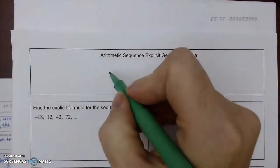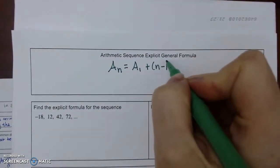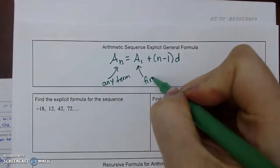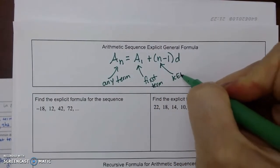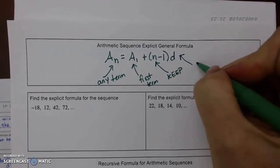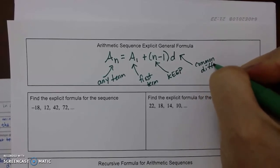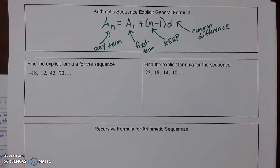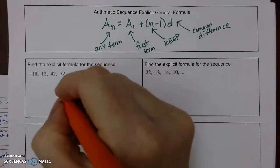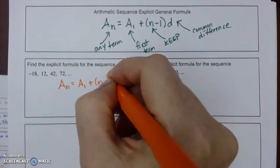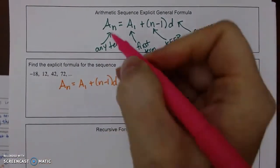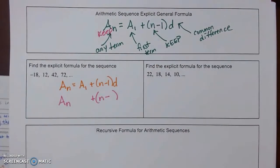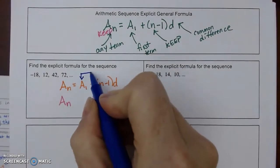Restating the general explicit formula: a sub n = a sub 1 + (n - 1)d, where a sub n is any term, a sub 1 is the first term, n is the term number (keep this as n so you can substitute), and d is the common difference. To find the explicit formula, write the general formula and substitute what you know — always keep a sub n, the plus sign, and the n.